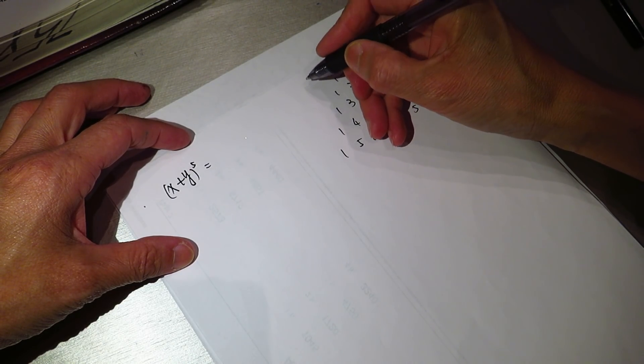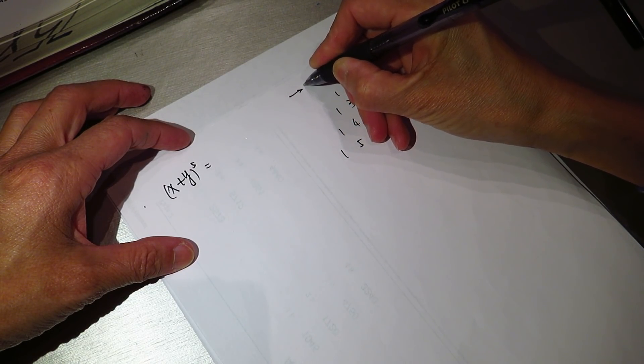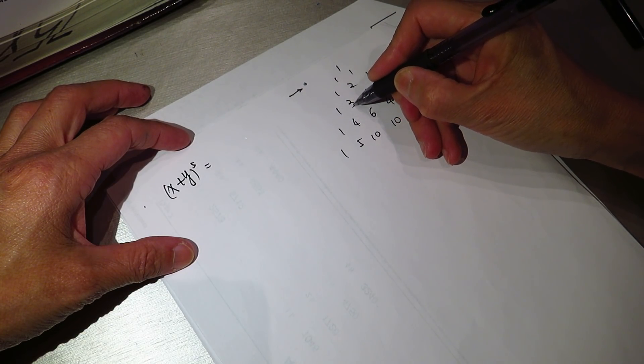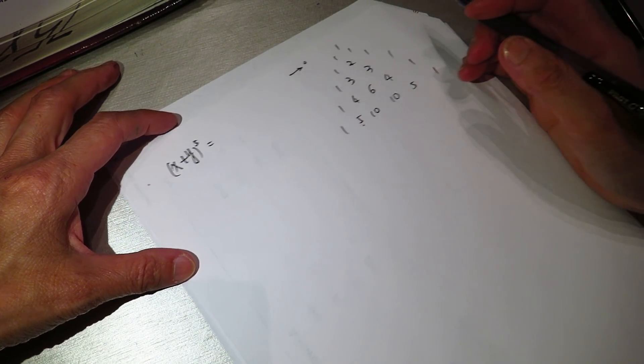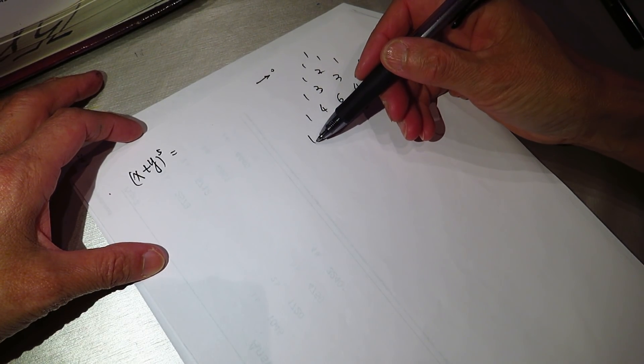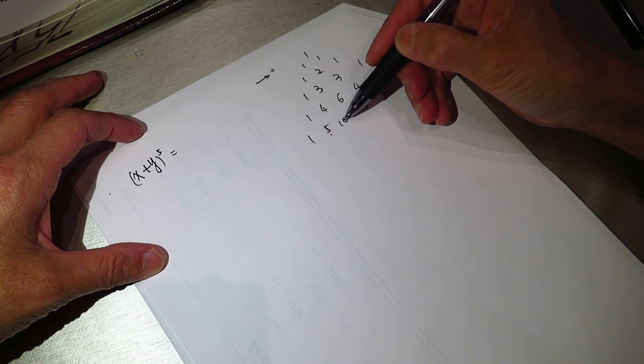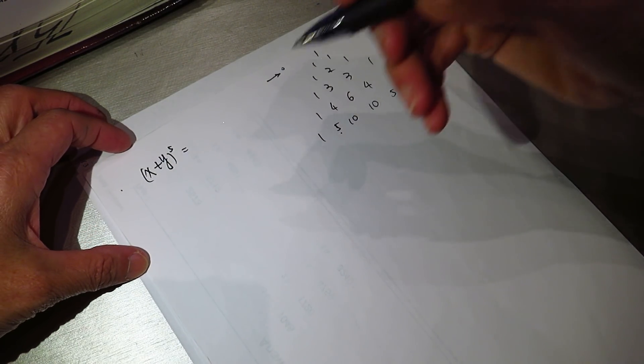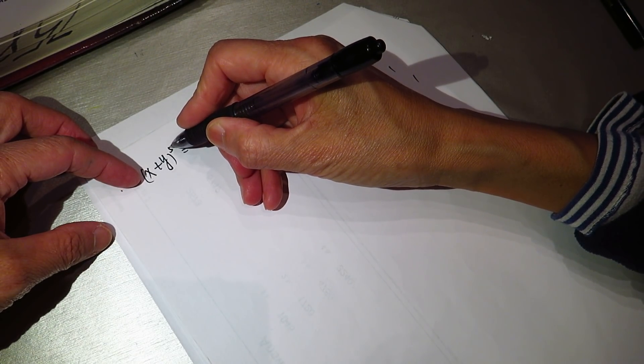This is to the power of zero, power of zero, power of one, power of two, power of three, power of four, power of five. So, we can, and another thing to see if we are right, we count the terms, one, two, three, four, five, six, six terms, which is right. The term will be always one number bigger than the power.